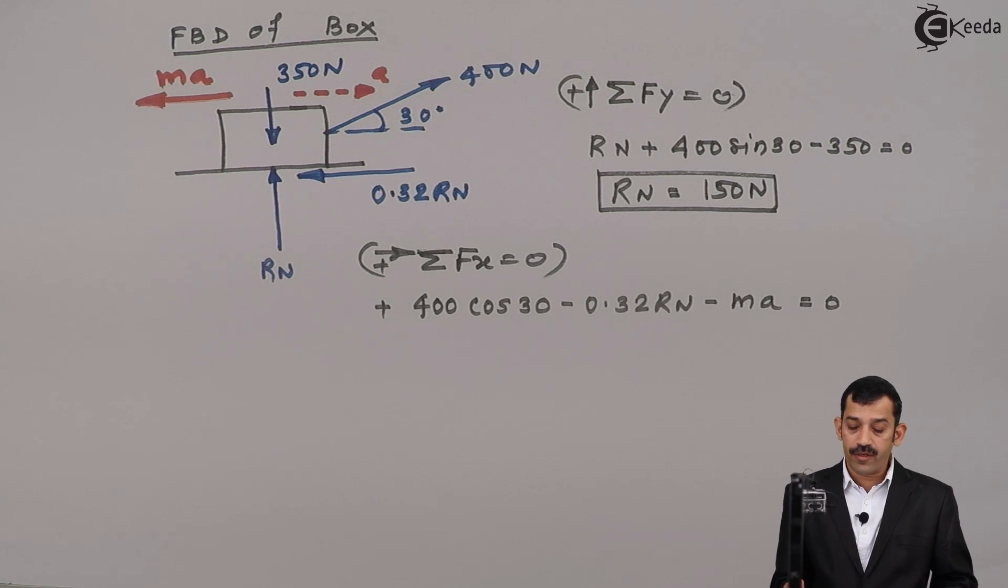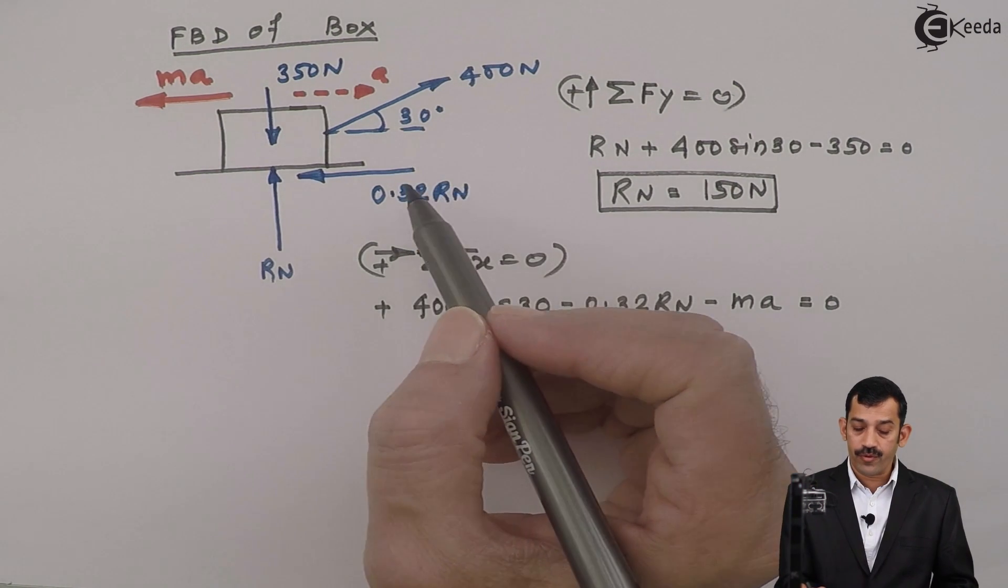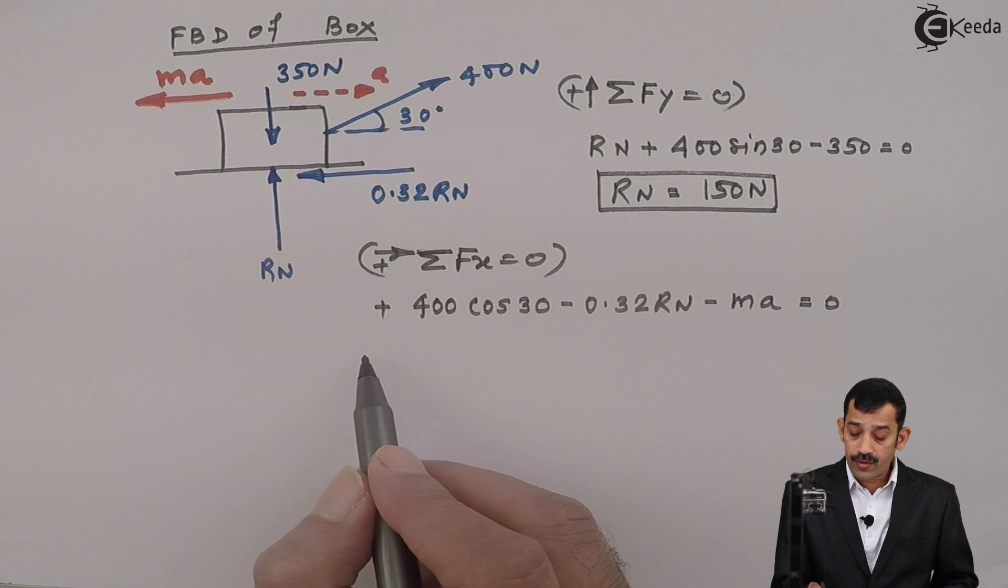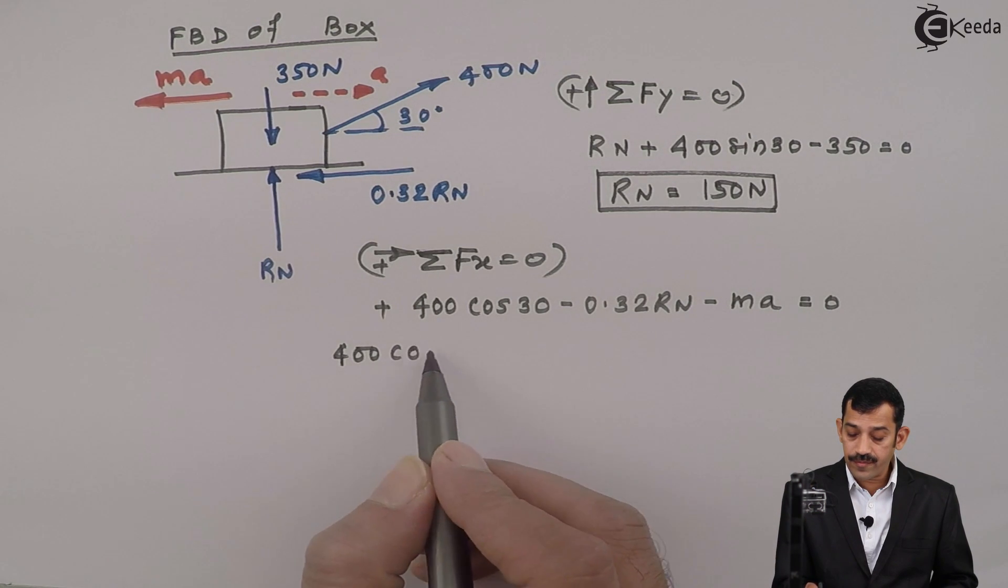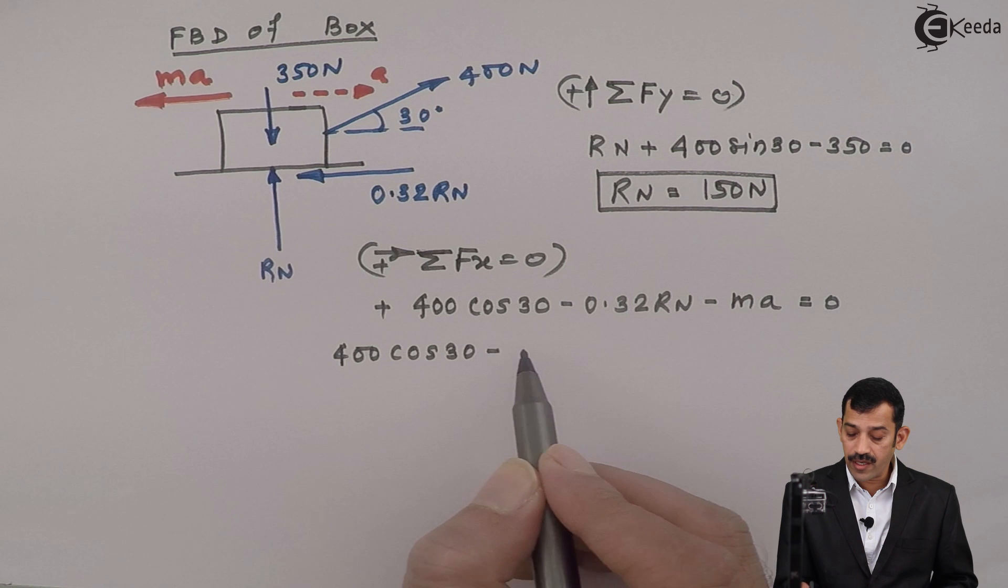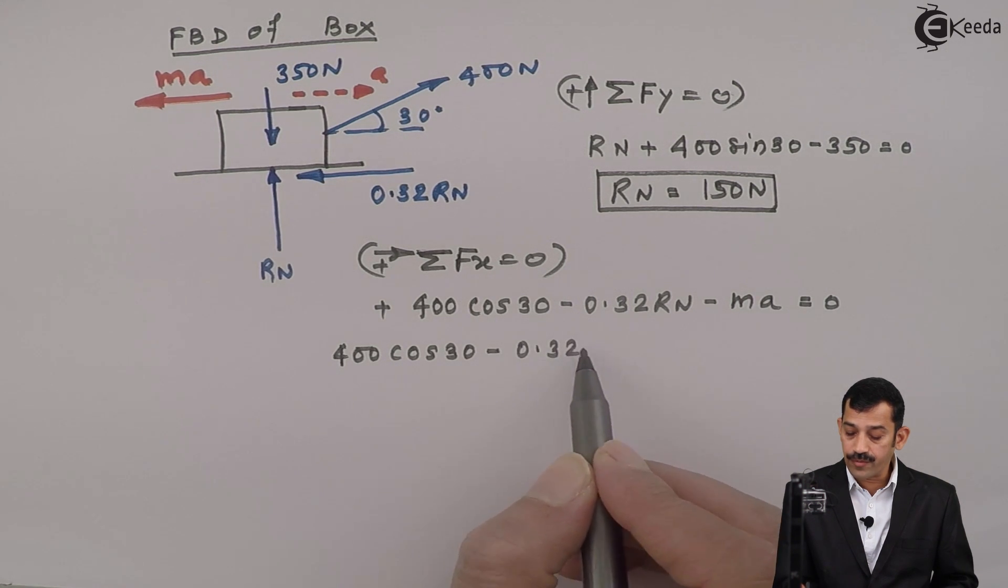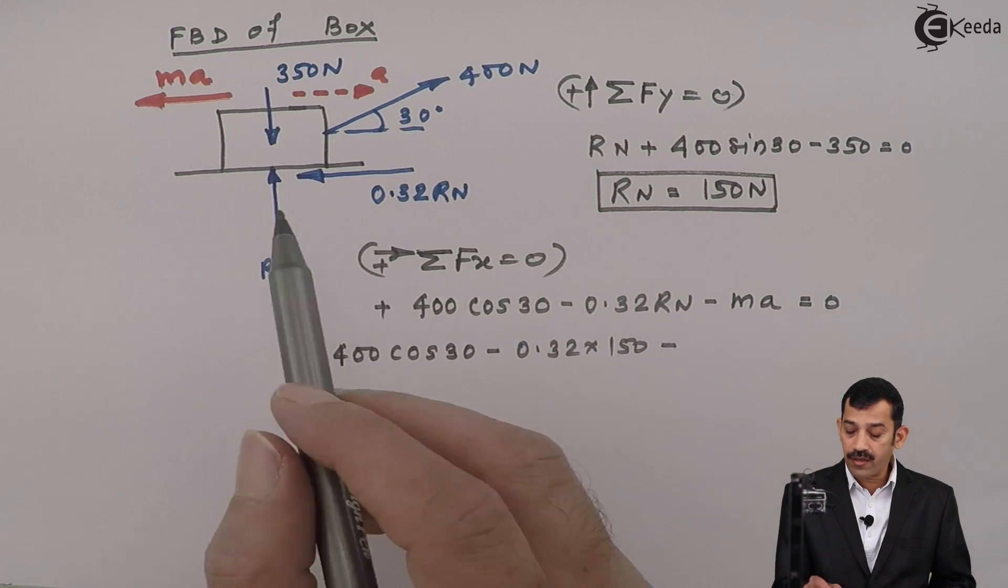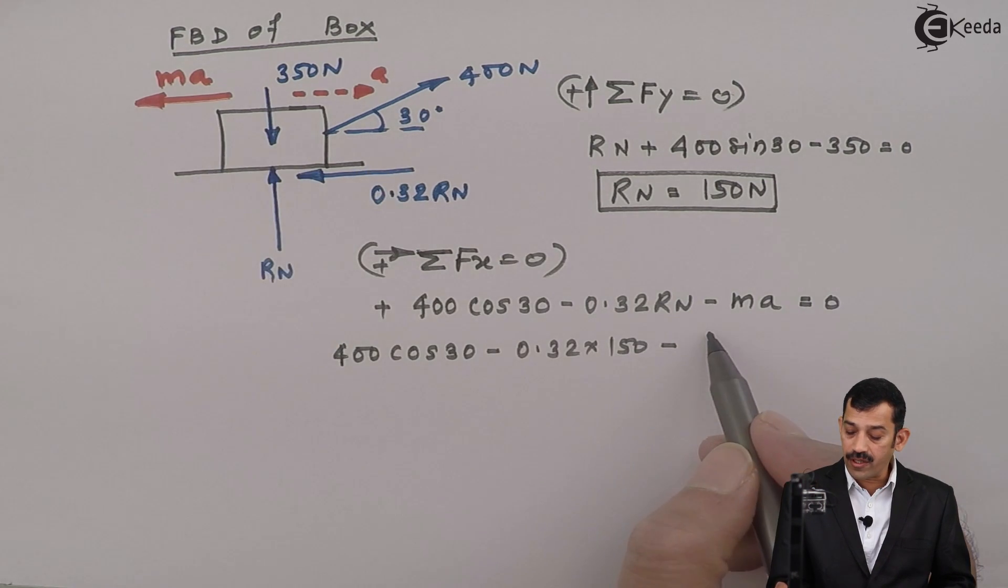Only three forces. Component of 400, then frictional force and Ma. Now this one is 400 cos 30 minus 0.32, Rn is 150 minus mass of box is not given, weight is given.